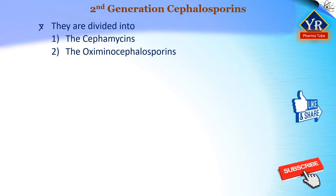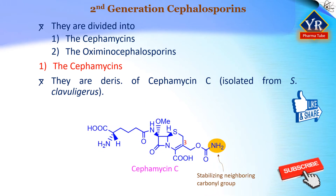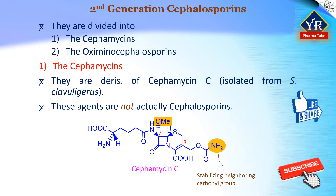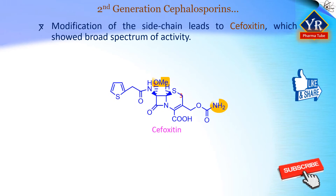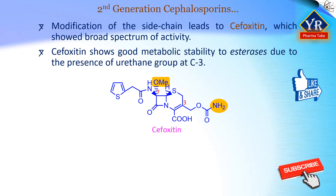Second-generation cephalosporins are divided into two groups: the cephamycins and the oxyiminocephalosporins. The cephamycins are derivatives of the parent compound cephamycin C, originally isolated from the culture of Streptomyces clavuligerus, and it was the first beta-lactam to be isolated from a bacterial source. They have a methoxy group on the beta-lactam ring at C7 of the cephalosporin core. Thus, these agents are not actually cephalosporins, but they are included in this group because they are chemically and pharmacologically similar. Modification of the side chain in cephamycin C gave cefoxitin, which showed a broader spectrum of activity than most first-generation cephalosporins. This is due to greater resistance to beta-lactamase enzymes, which may be due to the steric hindrance provided by the methoxy group. Cefoxitin shows good metabolic stability to esterase enzymes owing to the presence of the urethane group at position 3 rather than an ester group.